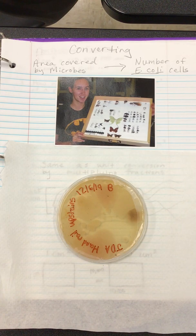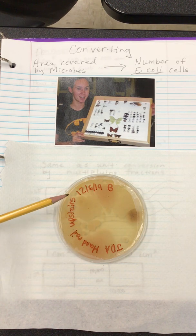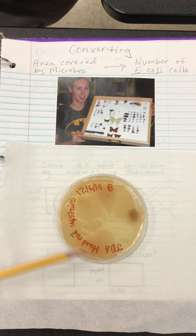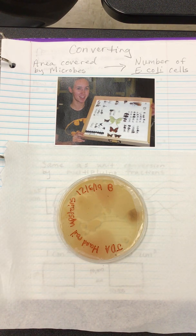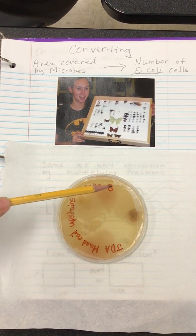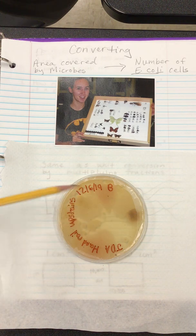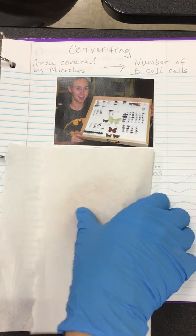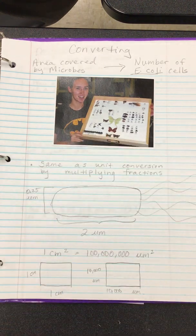Hi, it's Ms. Parrott, and in this video we're going to be converting the area covered by microbes. Here's a petri dish covered by all sorts of microbes, and if we assume that those are all E. coli cells and that E. coli cells have a standard size, we can actually figure out how many cells are growing in this petri dish. In order to do that, we first need to know how big an E. coli cell is.